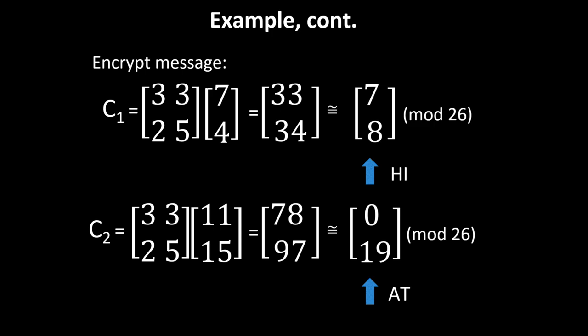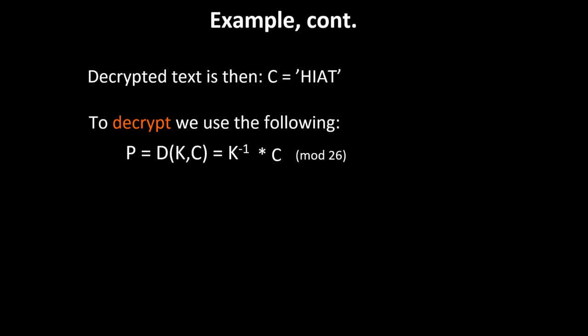We need to do the same for the second part. Now we encrypted HE, now we want to encrypt LP. We do the same thing with the matrix multiplication, then modulus 26. The resulting vector is [0, 19]. We map that back using a dictionary and get AT. So HELP encrypted becomes HIAT.